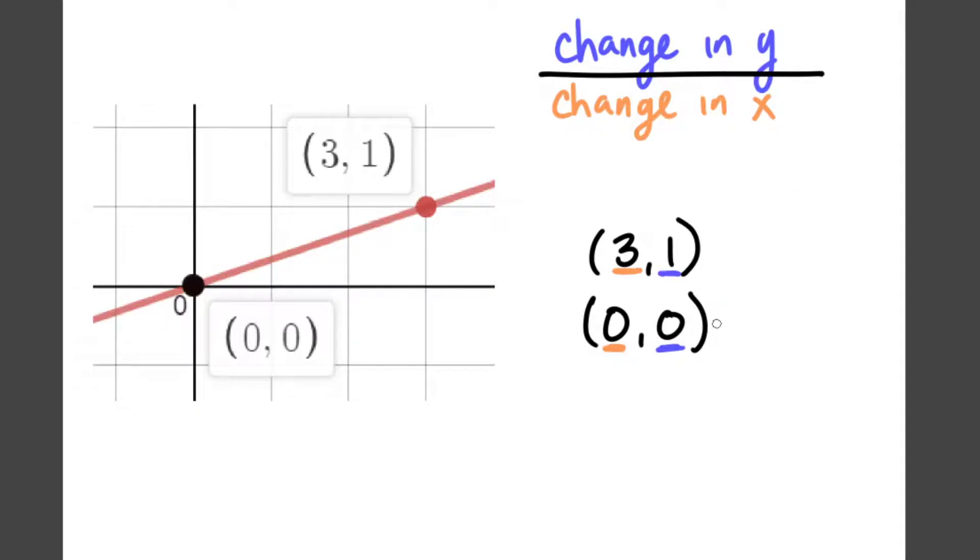So for example, how much did my y value change? It went from 0 to 1. Well, this changed by adding 1. 0 plus 1 gives me 1. How much did my x values change by? I went from 0 up to a 3. Well, this changed by adding 3. So now I just have to put these back together my ratio change in y, which was plus 1, over my change in x, which was plus 3. And there's my slope. 1 over 3.